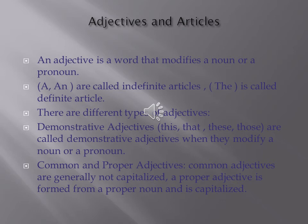Adjectives and articles. An adjective is a word that modifies a noun or a pronoun. A and an are called indefinite articles. The is called the definite article. There are different types of adjectives. This, that, these, and those are called demonstrative adjectives when they modify a noun or a pronoun.